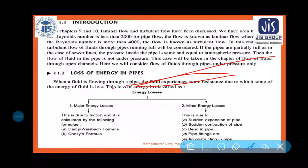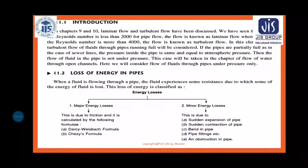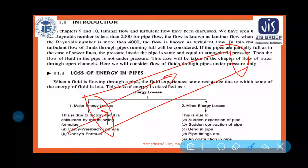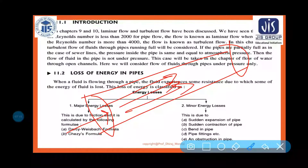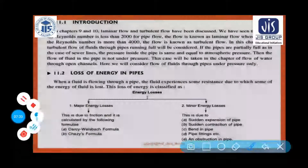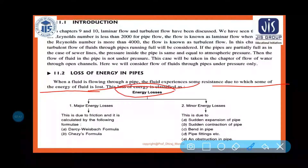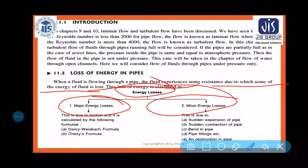When fluid flows from one point to another through a pipe under pressure, there is some loss of pressure due to frictional dissipation. One layer of fluid glides over another adjacent layer, causing frictional loss where pressure energy is converted into heat energy or intermolecular energy. The energy lost by fluid flowing through a pipe can be classified into two types: major energy loss and minor energy loss.